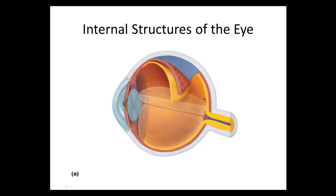The large region behind the lens to the retina is called the posterior segment, and it is filled with a different material called the vitreous humor. It looks like a soft-set jello — more solid in consistency compared to the watery aqueous humor. The vitreous humor gives shape to the eye and helps bend light toward the proper spot on the retina for good vision.